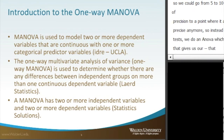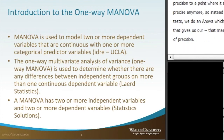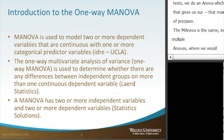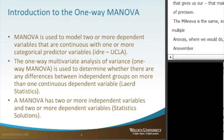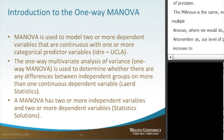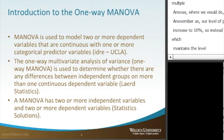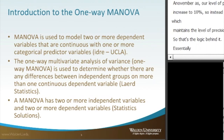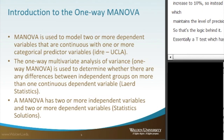The MANOVA is the same. Instead of doing multiple ANOVAs — where we would do, say, two separate ANOVAs and our level of precision would increase to ten percent from five — we just do a MANOVA, which maintains our five percent level of precision. That's the logic behind the MANOVA. It's essentially a t-test which has been multiplied onto itself into a single statistical test.